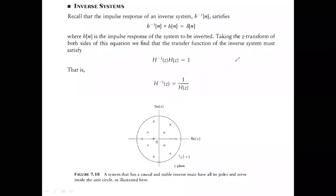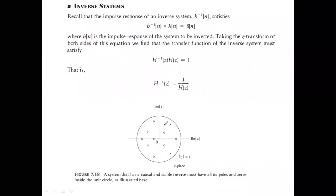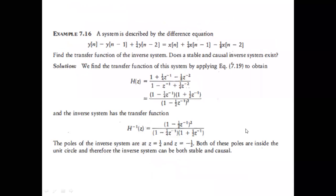Conclusion: get the transfer function H(z), take 1/H(z) — that is your inverse system — and it lets you recover the original signal x(n). For both H(z) and H⁻¹(z) to be stable (minimum phase), all poles and zeros must lie inside the unit circle. You may be given a difference equation and asked to find the inverse system and whether a stable causal inverse exists.